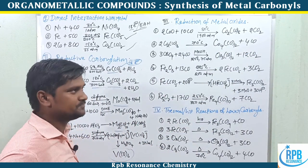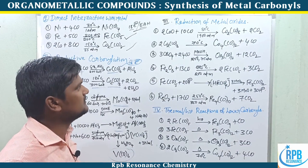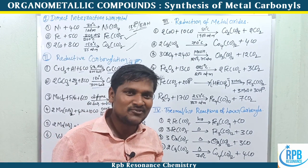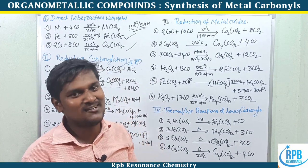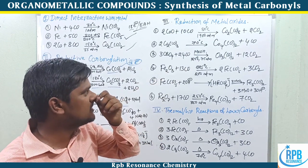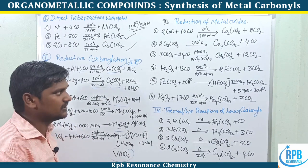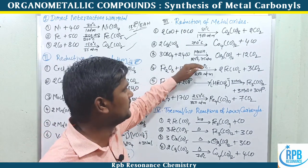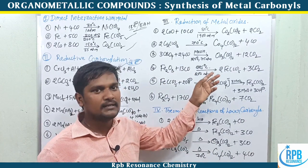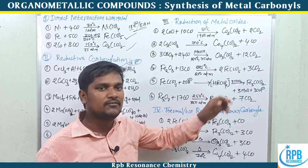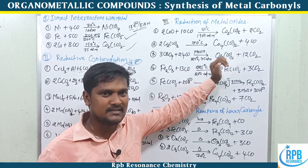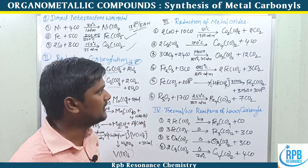Third example: three moles of osmium tetroxide treated with 24 moles of carbon monoxide in the presence of methanol as solvent at 125°C and 75 atmospheres pressure gives a trimer of osmium metal carbonyls — Os3(CO)12.